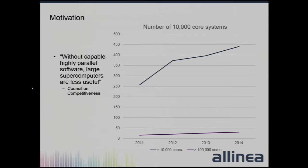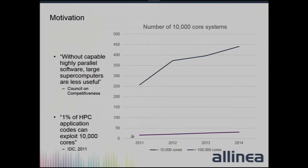What was written by one of the Councils of Competitiveness is that without capable, highly parallel software, large supercomputers are less useful - and to be honest, without the software the systems are actually useless. A number of years ago, only 1% of HPC codes could exploit 10,000 cores, and at that time there were already 250 machines of that size. There are a lot of codes just not able to take advantage of these machines, and I don't think the picture has improved much.